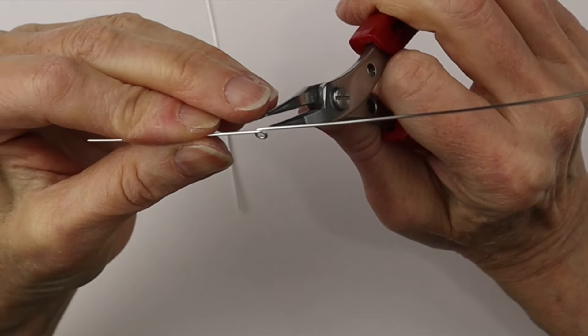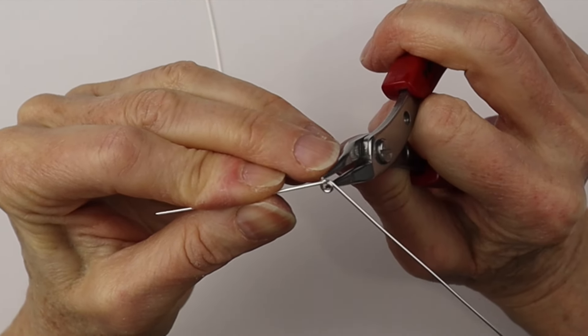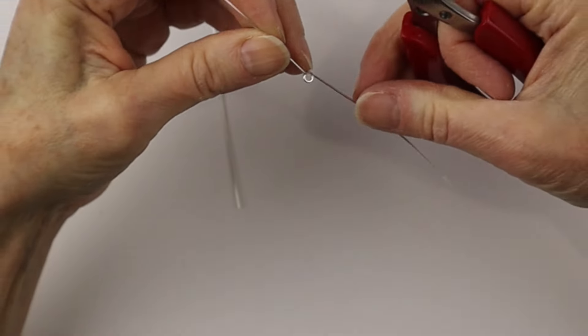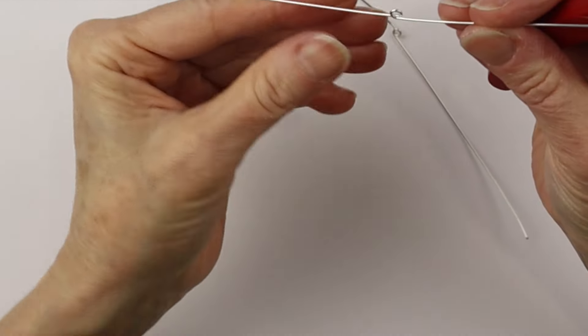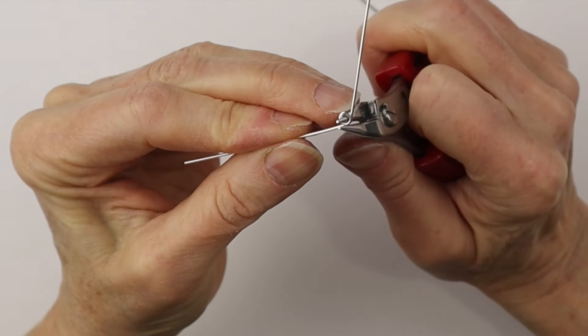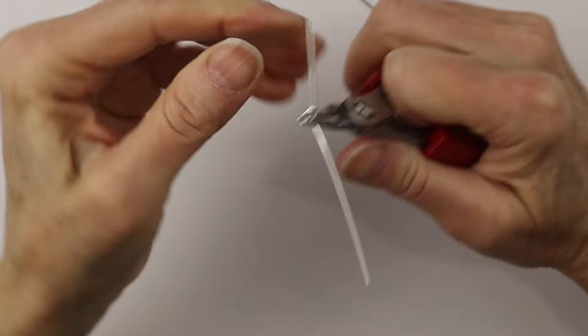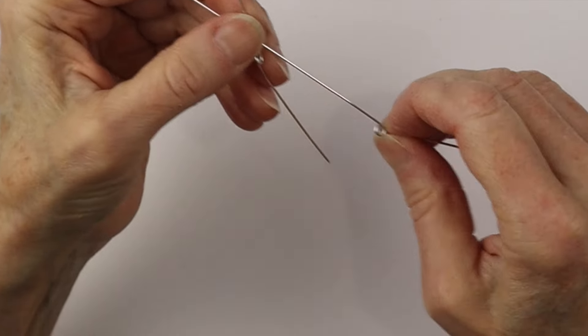Now I'm going to just bend it at a bit of an angle and up, and that's going to be the top of the teardrop. Using our smaller round nose pliers, I'm just going to bend it out and up just a little bit of a jog for the top.